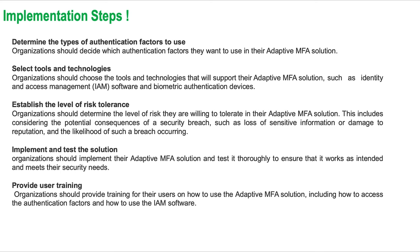Let's take a closer look at the adaptive MFA implementation steps. Implementing adaptive MFA involves several steps: determining the types of authentication factors to use, selecting the right tools and technologies, and establishing the level of risk the organization is willing to tolerate. Organizations should decide which authentication factors to use — something the user knows like a password or PIN, something the user has like a smart card or security token, and something the user is like a fingerprint or facial recognition. It is important to choose factors that are easy for users to use while also providing a high level of security.